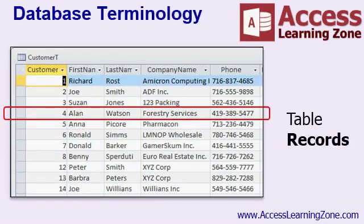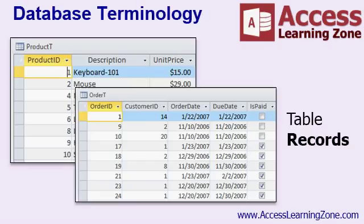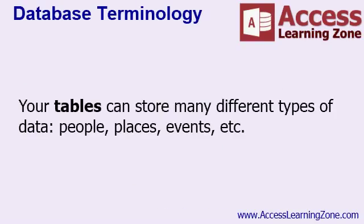All of the data concerning one item is stored in a record. Each record consists of the collection of all of the fields of data for that item. In this customer table, for example, each record represents one customer. Here I've highlighted one customer, Alan Watson, in red. You can think of a record like a row in an Excel spreadsheet. In a product table, each record would represent one product; in an order table, each record would represent one order; in a timesheet table, each record might represent one instance of an employee clocking in or out. So your tables can store many different types of data — people, places, events, and so on.